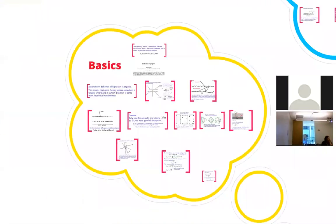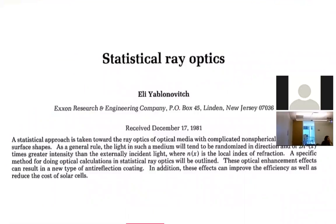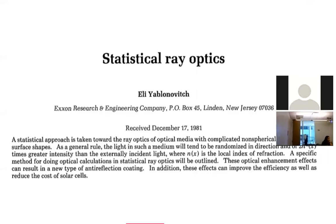We need to understand some basic principles and look at some thermodynamics — a little abstract with some mathematics, but let's go through it carefully. Most of today's lecture relies on an important paper called 'Statistical Ray Optics,' written by Eli Yablonovitch, who is well known for photonic crystals. He wrote this paper in the early 1980s while at Exxon Research and Engineering. Today he's a professor at Berkeley — one of those who have been nominated for the Nobel Prize several times.